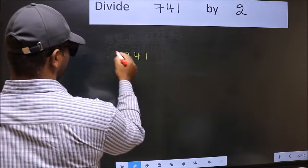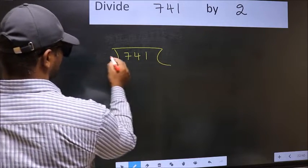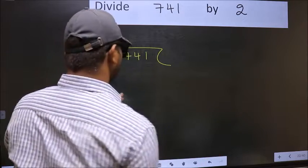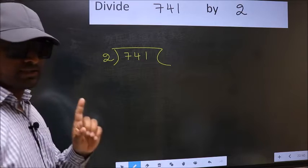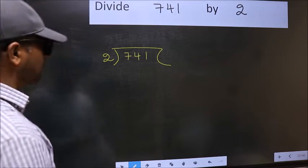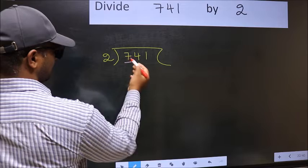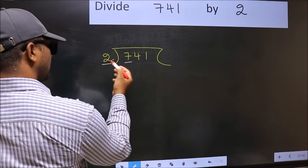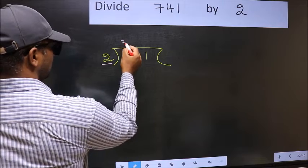741, 2 here. This is your step 1. Next, here we have 7 and here 2. A number close to 7 in 2 table is 2 3s, 6.